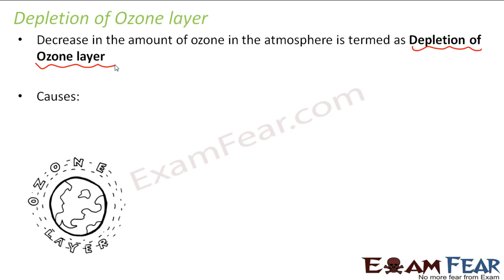What is the cause of this depletion? When we say the amount of ozone is decreasing, we mean the thickness of the ozone layer is decreasing. This decrease in thickness of the ozone layer is also known as the ozone hole — a hole created in the ozone layer.